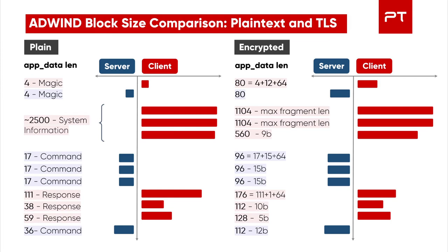Now let's get back to Edwin and see how the data sizes change after alignment at the TLS record layer. The first short packets contain data that need only one block of ciphertext. Thus, a TLS fragment is 80 bytes long: that is 16 bytes IV, 48 bytes HMAC — which is 64 — plus 4 bytes of data and 12 bytes of padding, which are encrypted together. As you can see, the structure of client-server communications has not changed. It's just that block lengths have been quantized, and detection of these lengths will be somewhat different from what we did with Remcos and TCP.